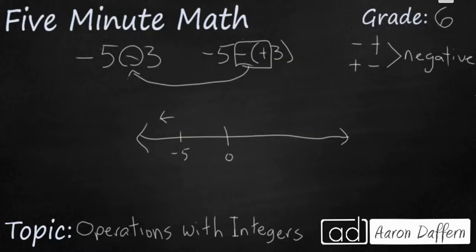You start at negative 5, and you subtract 3, and you're going to get over here to negative 8. And that's fairly simple.